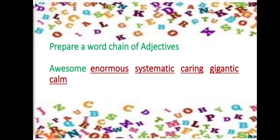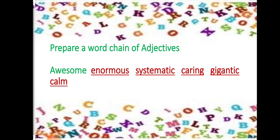Let us prepare a word chain of adjectives. My first word is 'awesome.' 'E' gives 'enormous', 's' gives 'systematic', 'c' gives 'caring', then 'gigantic', and 'c' gives 'calm.'